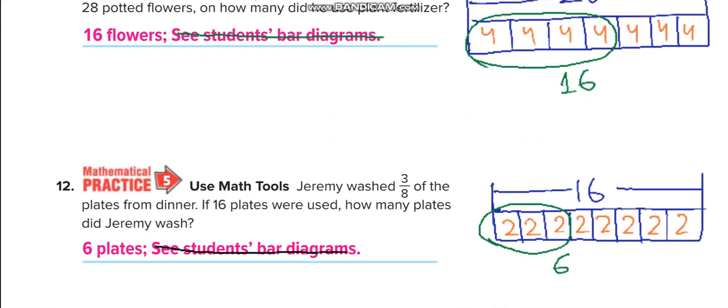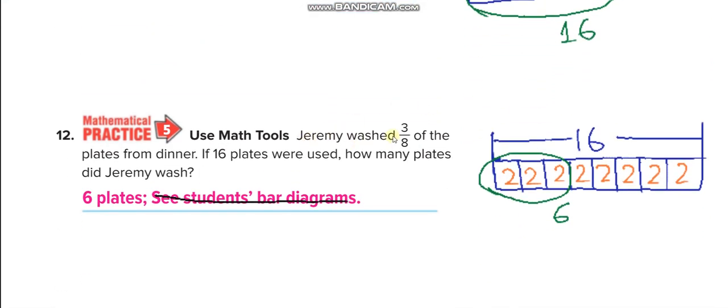Jeremy washed 3/8 of the plates from dinner. If 16 plates were used, how many plates did Jeremy wash? So 3/8 of 16: you will divide 16 into 8 equal parts. Each part is 2. 16 divided by 8 is 2. And you will choose 3 parts, the numerator. So 2, 2, and 2 is 6.